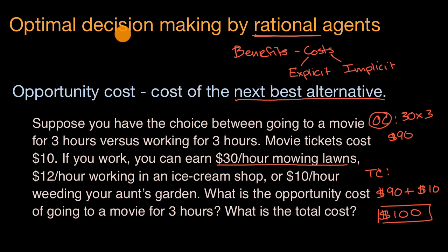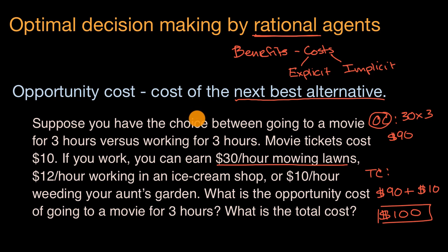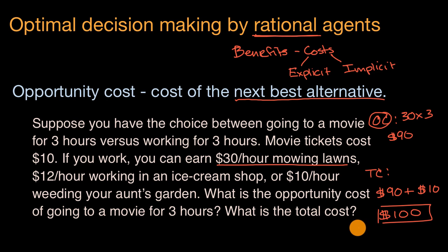How would a rational agent use this information to make an optimal decision? They would compare that $100 total cost to the benefit of going to a movie. If they could quantify the benefit — say the benefit is $200 — and that $100 difference is the best they can get out of all their choices, then they would go to the movie. In future videos, we'll dig a little bit deeper into this.